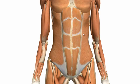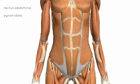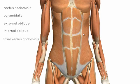In the anterior abdominal wall there are five muscles, all innervated by anterior rami of spinal nerves T7 to L1. These are the rectus abdominis, the pyramidalis, the external oblique, internal oblique, and transversus abdominis.